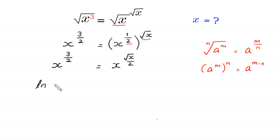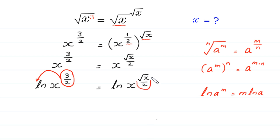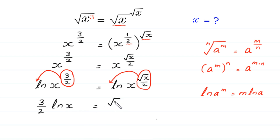Now we take the natural log of both sides. ln of x to the power 3 over 2 is equal to ln of x to the power square root of x over 2. According to the natural log property, ln of a to the power m equals m times ln of a. So 3 over 2 times ln of x is equal to square root of x over 2 times ln of x.